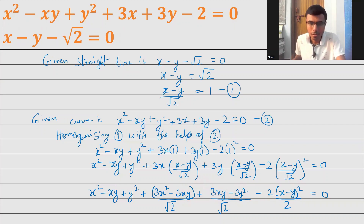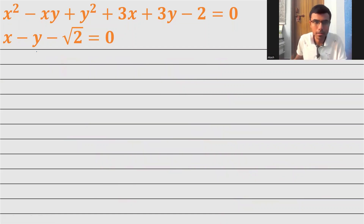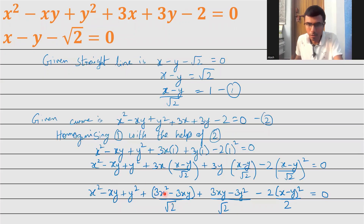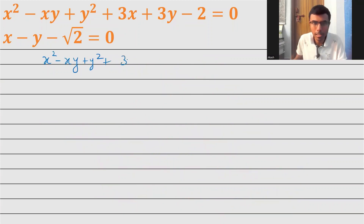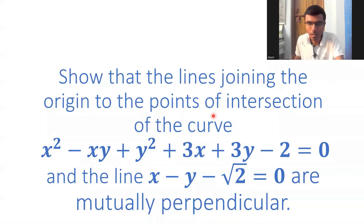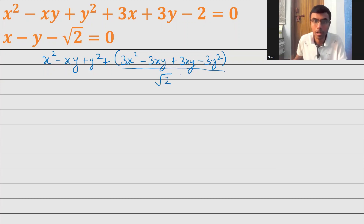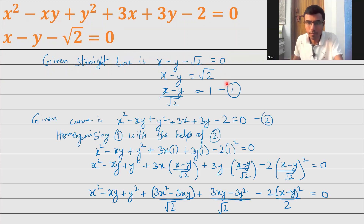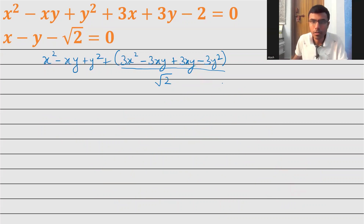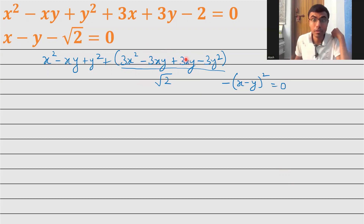The first three terms remain as x squared minus xy plus y squared. Taking LCM for the root 2 terms: 3x squared minus 3xy plus 3xy minus 3y squared, all over root 2. The minus 3xy and plus 3xy cancel, leaving 3x squared minus 3y squared over root 2. And we still have minus of (x minus y) whole squared.